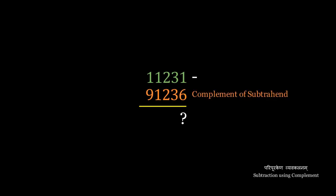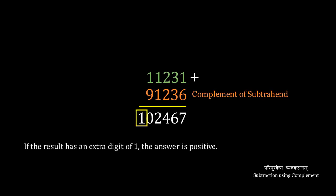And then you add it to the first number, that is the minuend, and there is an extra digit, a 1, which means the answer is positive, and you can just drop that extra digit to get the answer, which, in this case, is 2,467.